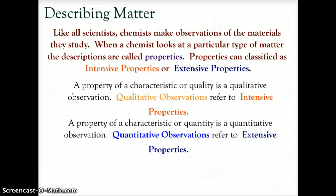Properties can either be intensive or extensive. Anything that's a characteristic or quality is considered a qualitative observation, which refers to intensive properties. Now a property or characteristic of quantity is a quantitative observation, and a quantitative observation is an extensive property.